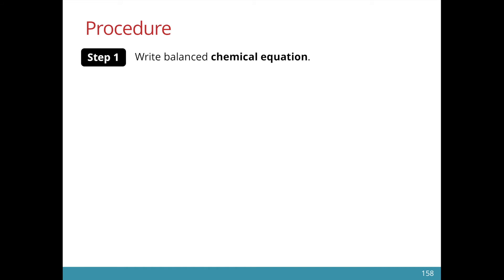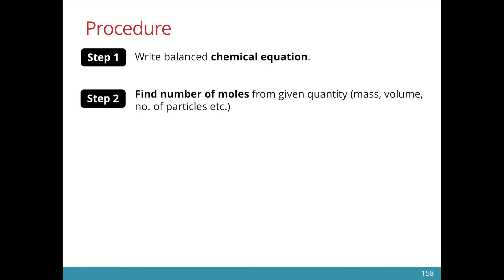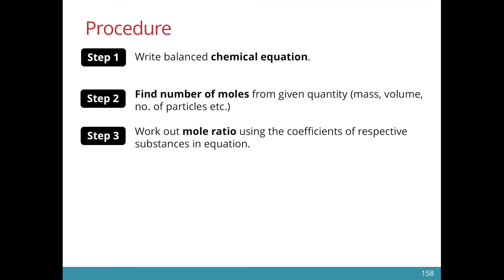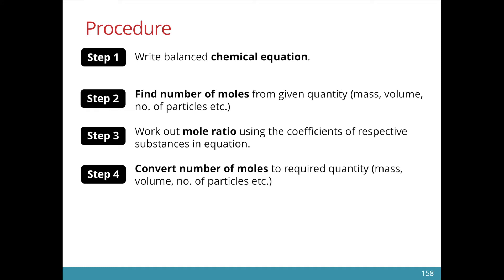The first step is always to write a balanced chemical equation — in certain cases this might be given in the question. The second step is always to find the number of moles, because sometimes they may give you the quantity in mass, volume, number of particles, or even concentration. So whatever quantity we are given, always find the number of moles first. We then work out the mole ratio by looking at the coefficients, and then convert the number of moles to the required quantity.